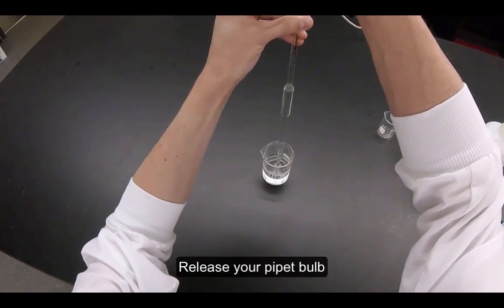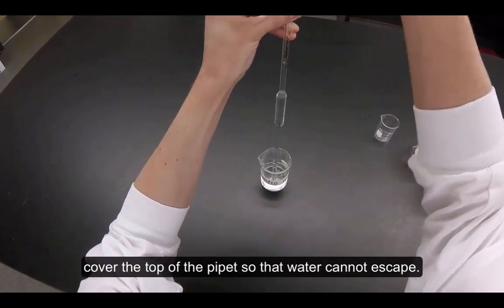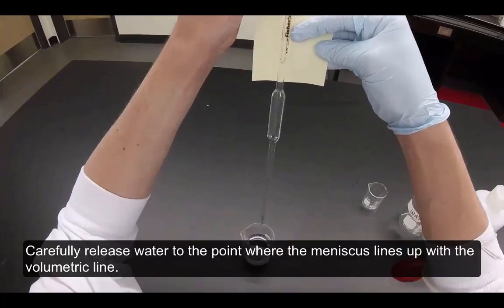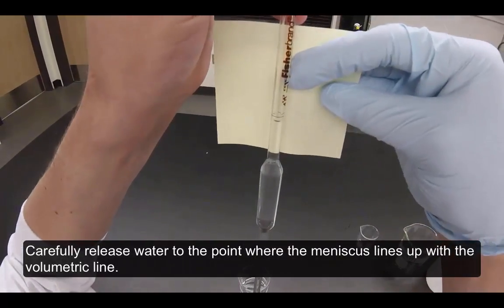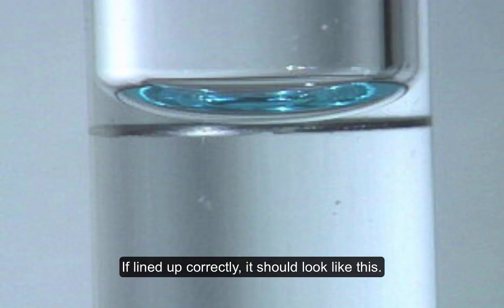Release your pipette bulb and using your hand without the glove, cover the top of the pipette so that water cannot escape. Carefully release water to the point where the meniscus lines up with the volumetric line. If lined up correctly, it should look like this.